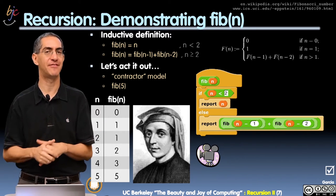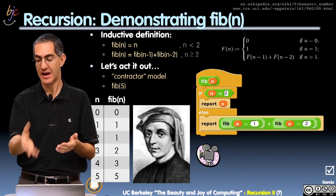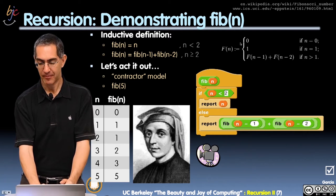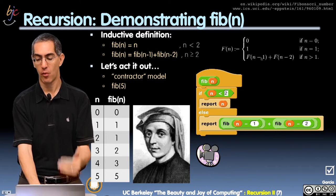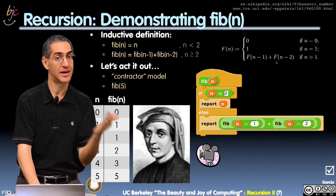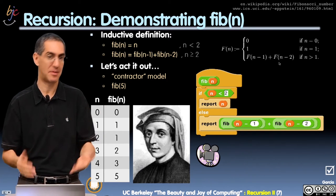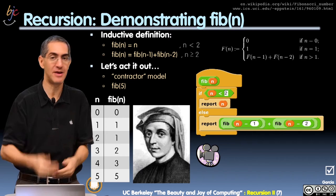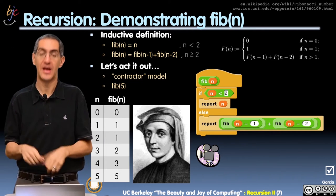That's a recursive definition — an inductive definition — in which if you see on the right, you see F of n equals zero if it's zero, one if it's one. Otherwise, it's F of n minus one plus F of n minus two. However many you had yesterday, however many you had two days ago, add those together.